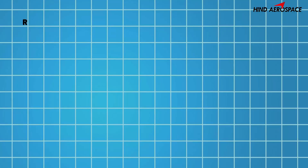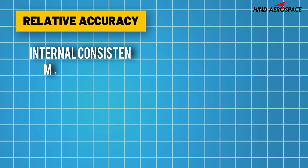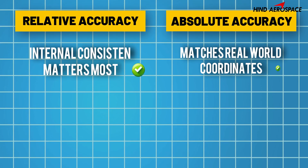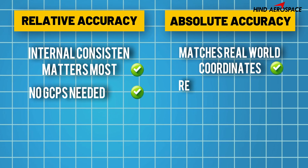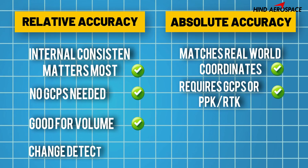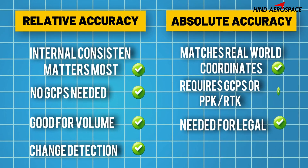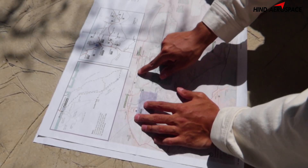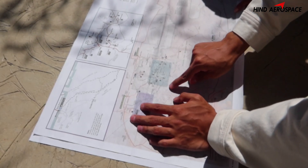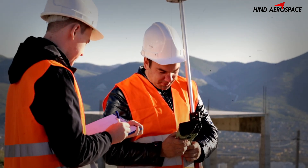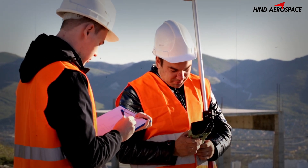Now let's discuss the key differences and why they matter. Relative accuracy: internal consistency matters most. Absolute accuracy: matches real world coordinates. Relative accuracy requires no GCPs; absolute accuracy requires GCPs or an RTK/PPK drone. Relative accuracy is good for volume and change detection; absolute accuracy is needed for legal and engineering work. Big takeaway: if you just need consistent measurements within your map, relative accuracy is enough. But if you need to match DGPS coordinates for legal or engineering work, you'll need absolute accuracy.